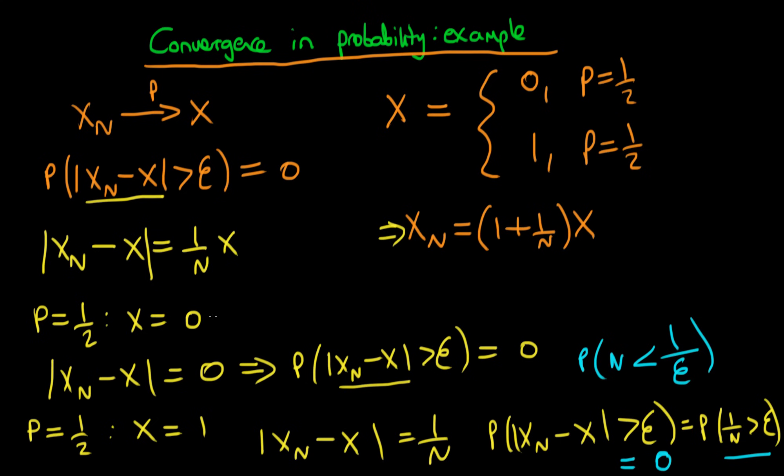Since we've demonstrated convergence in probability for each of the outcomes of our random variable, then that means that we can actually write that the probability that Xn minus X is greater than η is actually equal to zero, or another way of writing this is that Xn tends in probability to X.